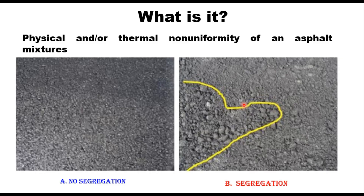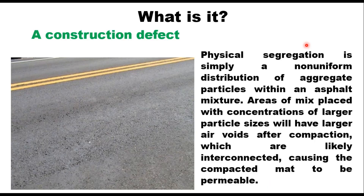Segregation is the physical or thermal non-uniformity of an asphalt mixture. Segregation is a construction defect and it is detrimental to the performance of the pavement. Physical segregation is simply a non-uniform distribution of aggregate particles within an asphalt mixture. Areas of mix placed with concentrations of larger particles will have larger air voids after compaction, which are likely to be interconnected, causing the compacted mat to be permeable.